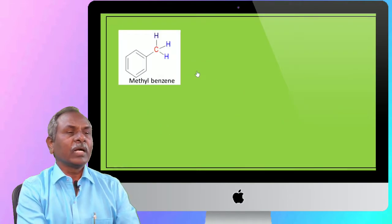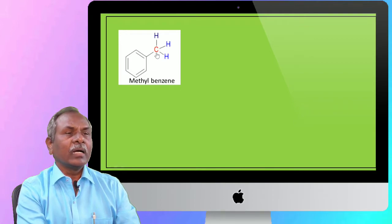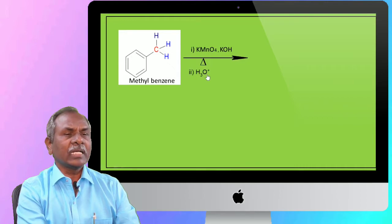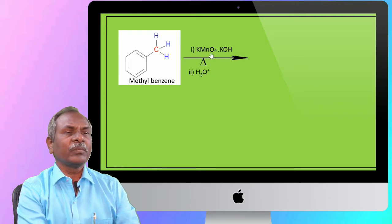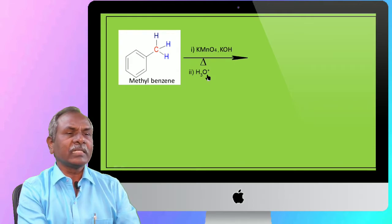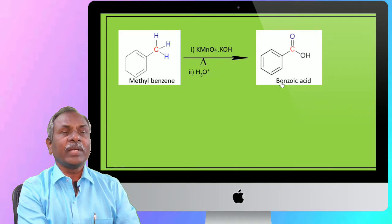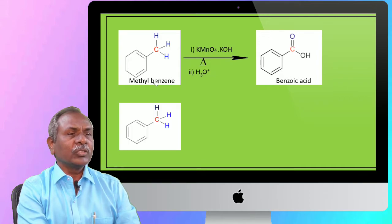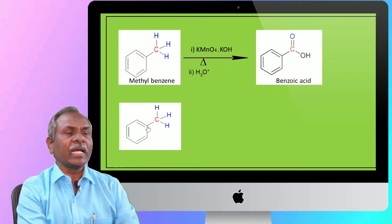This is the structure of alkyl benzene. With KMnO4 in alkaline medium and heating, followed by acid hydrolysis as the second step, methyl benzene on oxidation with alkaline potassium permanganate gives an intermediate which on acid hydrolysis gives the final product — benzoic acid. The carbon-carbon bond directly bonded to the aromatic ring undergoes this reaction.